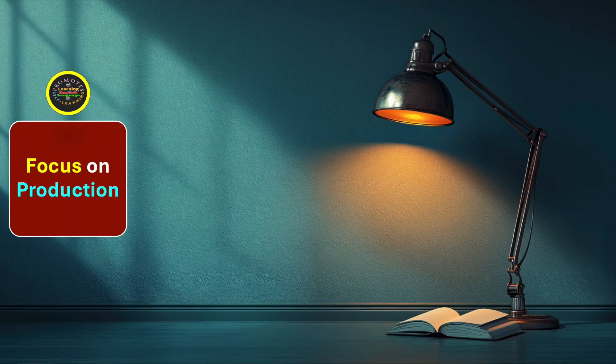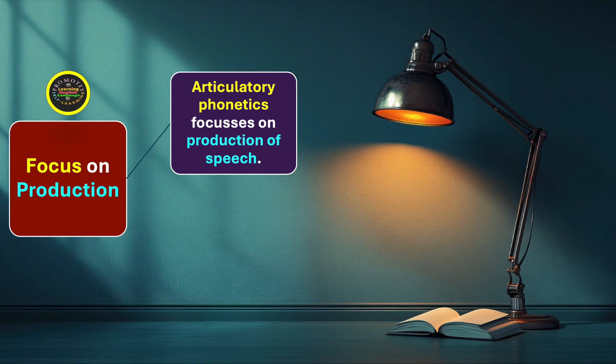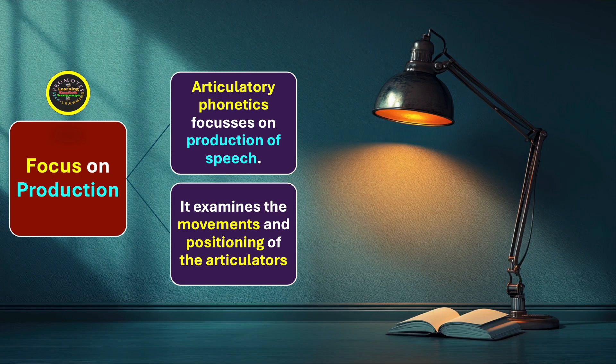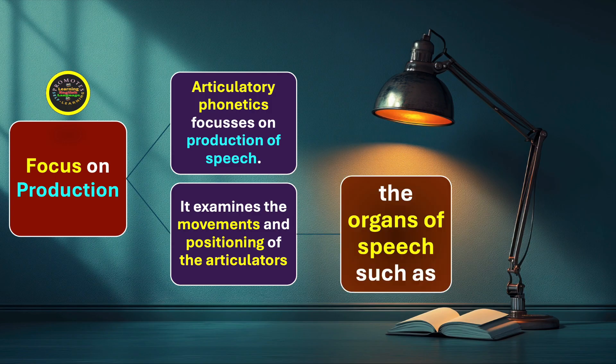The first characteristic is focus on production. Articulatory phonetics focuses on the production of speech — all the mechanisms that are in effect to produce a sound, helping you speak and make an utterance. It examines the movements and positioning of the articulators, referring to the organs of speech such as the tongue, lips, jaw, and vocal cords.